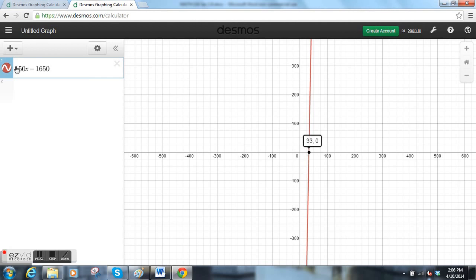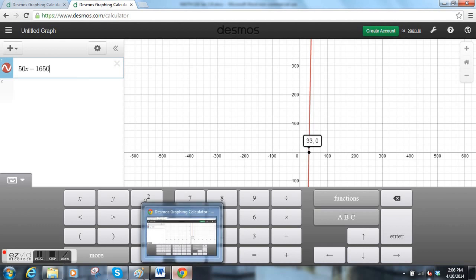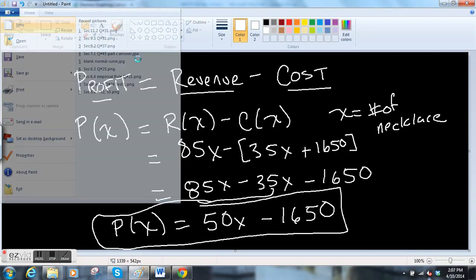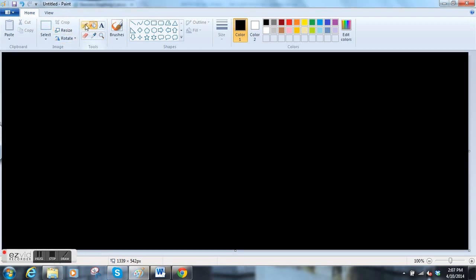If you're looking at the break-even point, there's a couple ways to do this. You can graph the profit function and look for where it crosses the x-axis, so look for the x-intercept.